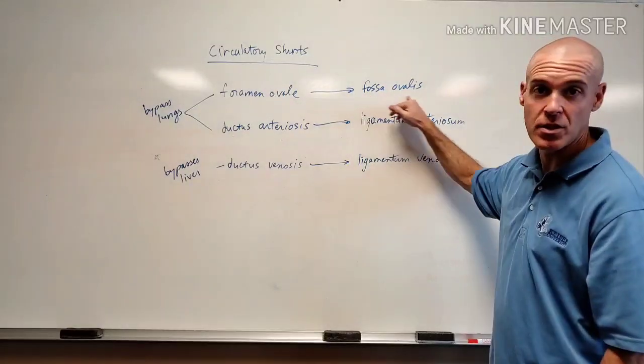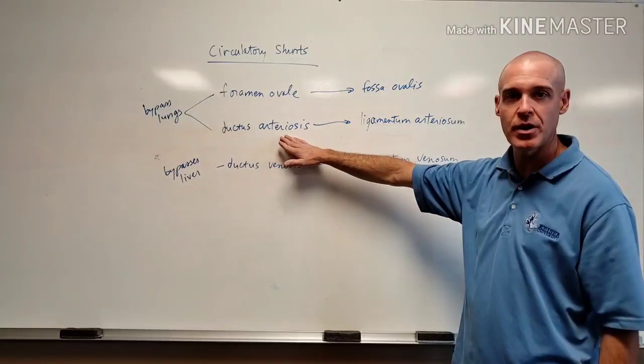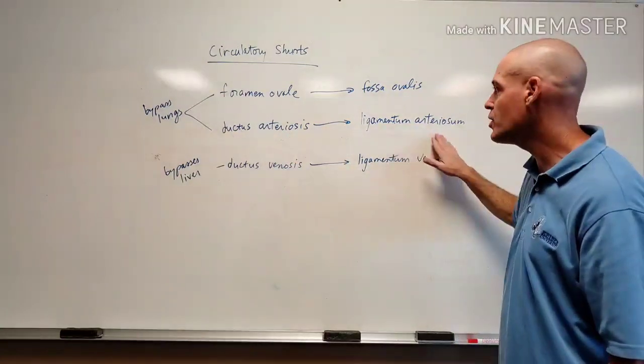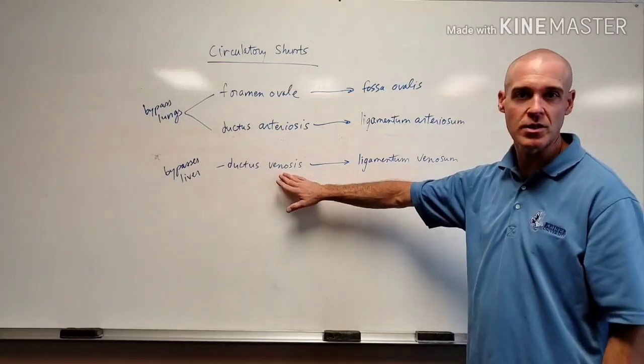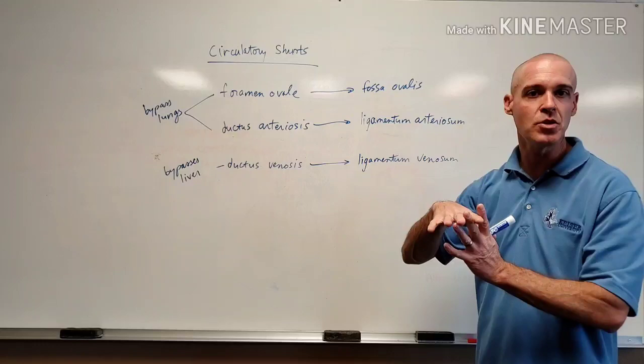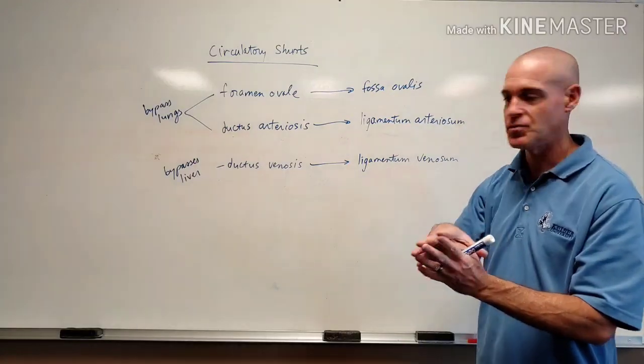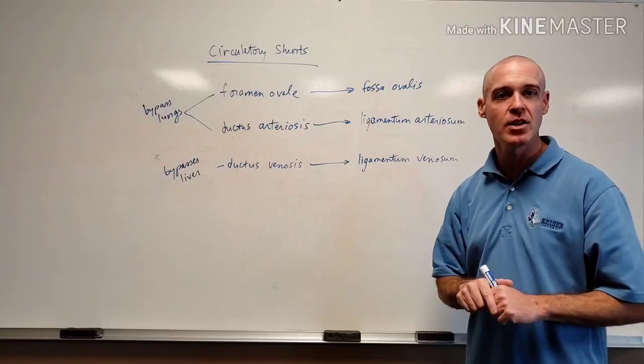Again, we refer to it as the fossa ovalis. Same thing here, slightly different. The ductus arteriosus will become the ligamentum arteriosum, so it's just going to fibrose over with connective tissue. Same with this one. Ductus venosus becomes the ligamentum venosum. Again, fibrose over with connective tissue. So there you go. Quick rundown on the circulatory shunts. Until next time, good luck, good study.